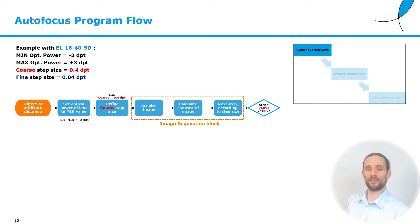Of course, at this point, we haven't defined yet any fine step size, so we are definitely in the coarse step size. And now we will also check whether the optical power, the current optical power, is smaller or bigger than the maximum optical power. The optical power is smaller than the max. What we will do is go again through the acquisition block. And we will do this up to the point where we reach the maximum optical power of the lens.